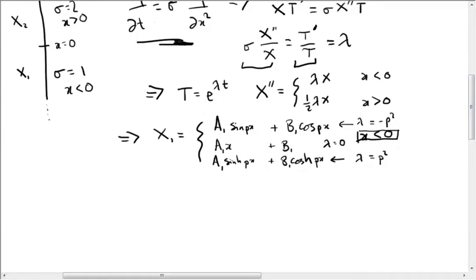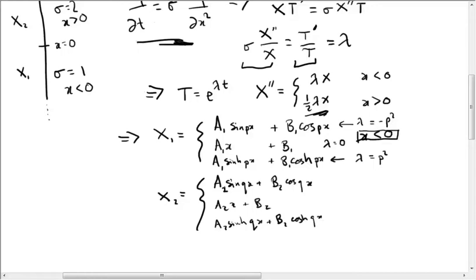Okay, similarly we can solve the equation for X2, which is X2 double prime equals a half lambda X2. And the solution for that simple harmonic motion equation is a2 sine qx plus b2 cos qx, or a2 x plus b2. And again this is for a half lambda equals minus q squared, or a half lambda equals q squared, or lambda equals zero, and this is where x is positive.